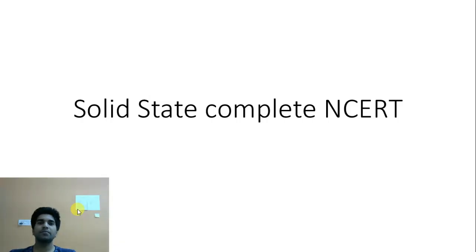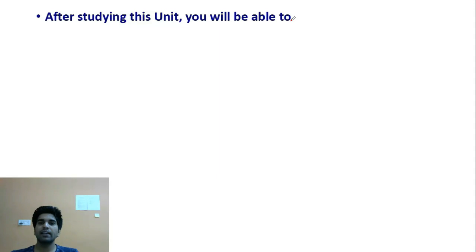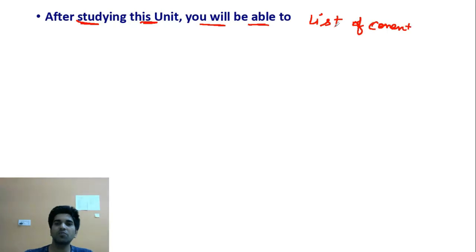When I study NCERT, the first question that comes to mind is: from where do we have to start? The answer is from the extreme left corner — there is a table of contents, and from that table we have to start. NCERT names it as 'After studying this unit you will be able to,' which is basically the list of content — what we are going to study in this chapter.